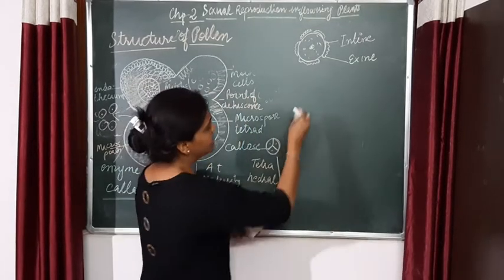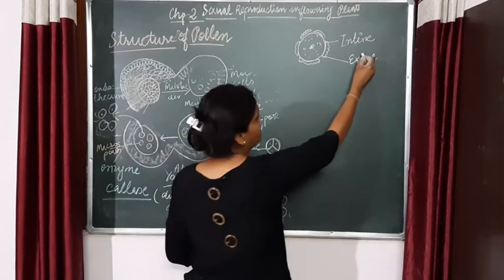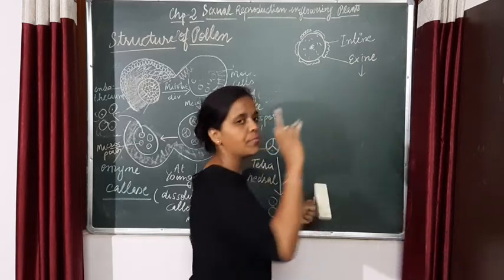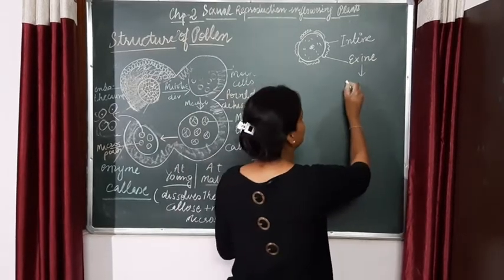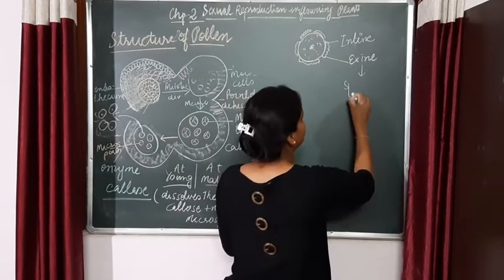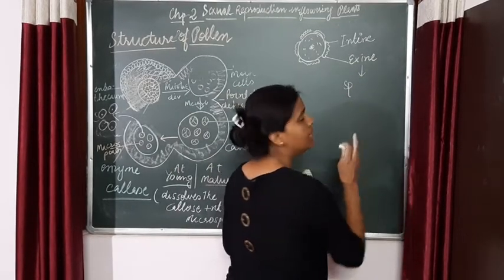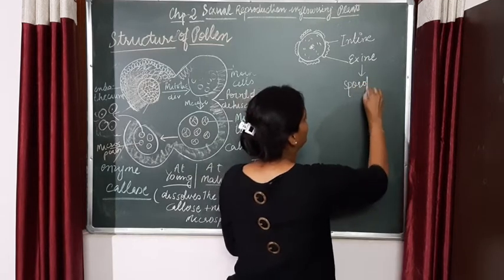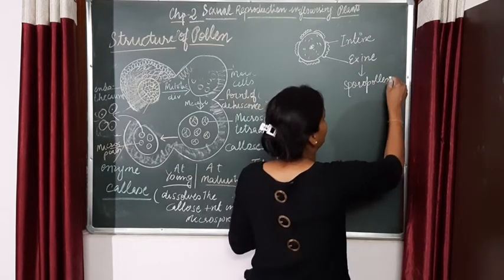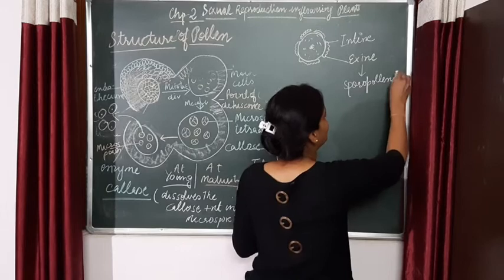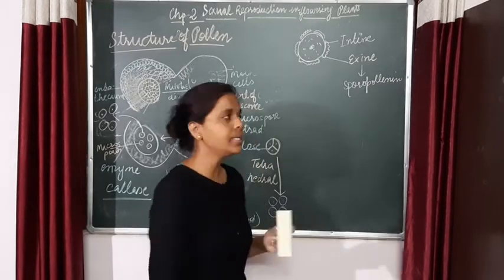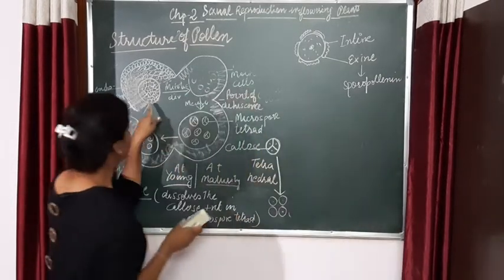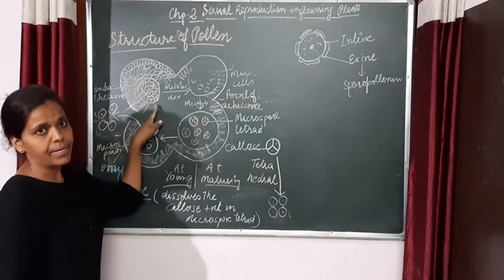This exine — from where is it secreted? You have to remember that this exine is secreted from the sporopollenin, and from where is this sporopollenin secreted? Again from the innermost layer, the tapetum.